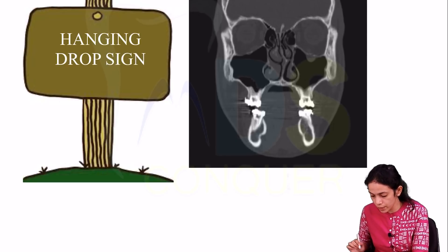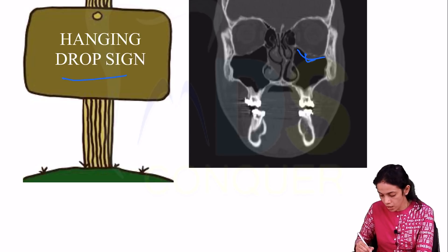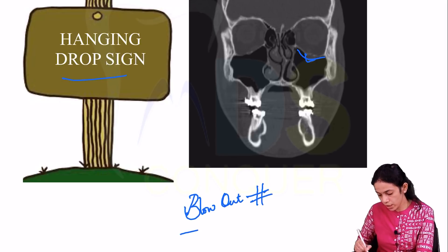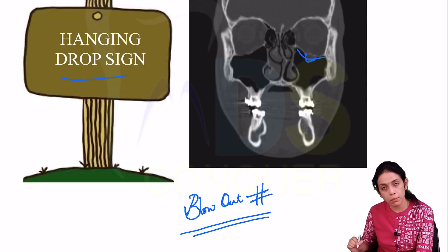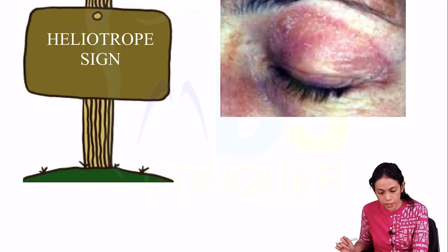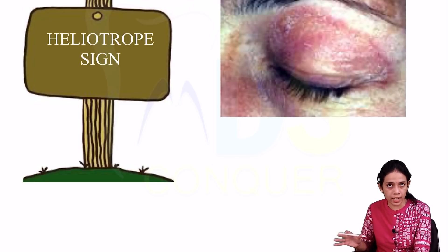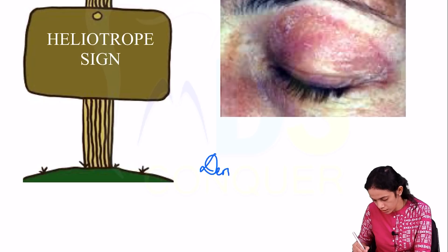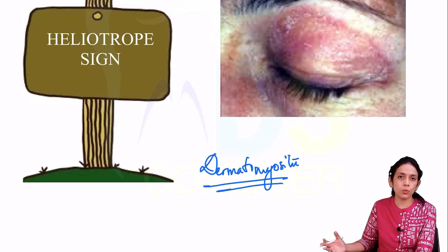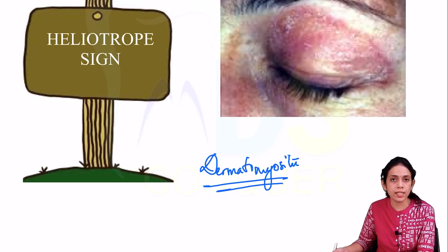Next is the Hanging Drop sign. A polypoid soft tissue is seen hanging down from the orbital floor as a radio-opacity, seen with blowout fractures. Next is the Heliotrope sign — violaceous or dusky erythematous skin eruptions in the periorbital region, with or without edema, seen symmetrically in patients with dermatomyositis.